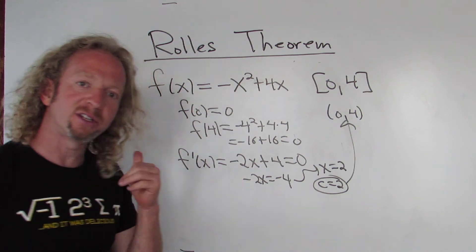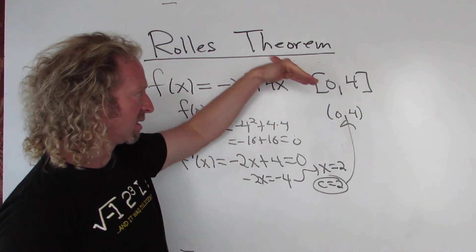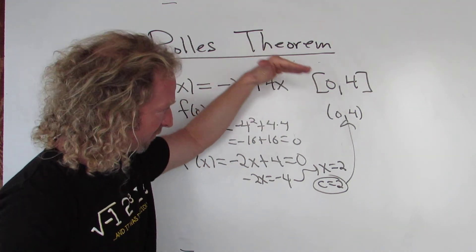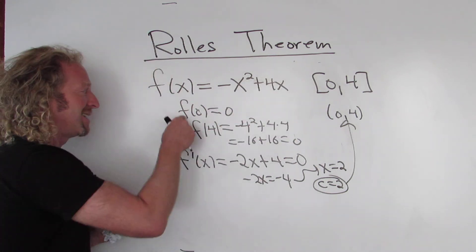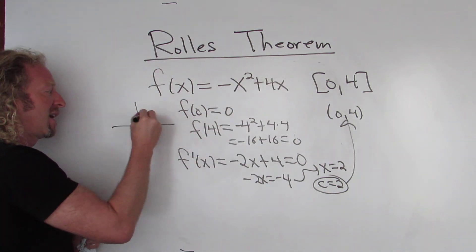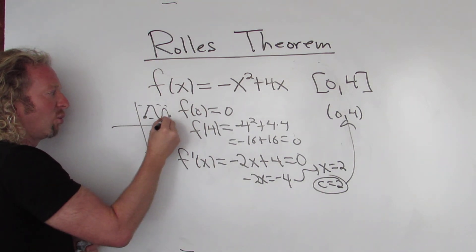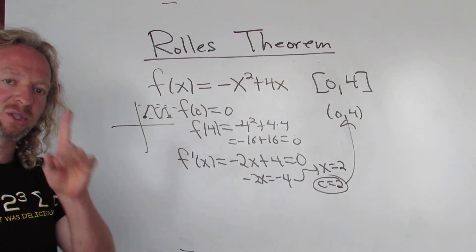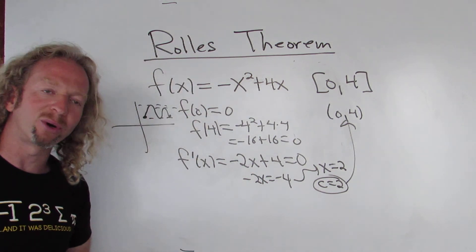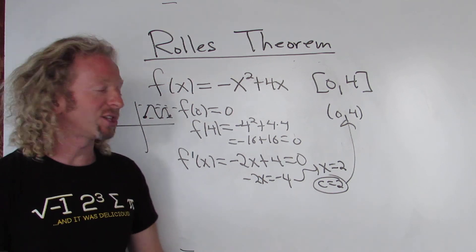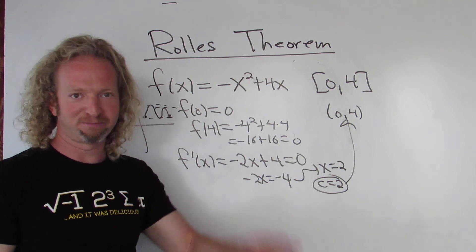I hope this video has helped. Remember, the conditions for Rolle's are it has to be continuous on the closed interval, differentiable on the open interval, and the endpoints have to have the same function values. And whenever that happens, all it's telling us is there's going to be at least one place where the derivative is 0. In other words, there's at least one place where we have a horizontal tangent line. That's it. Thanks for visiting my channel. I hope this video has helped you in some way. Bye.